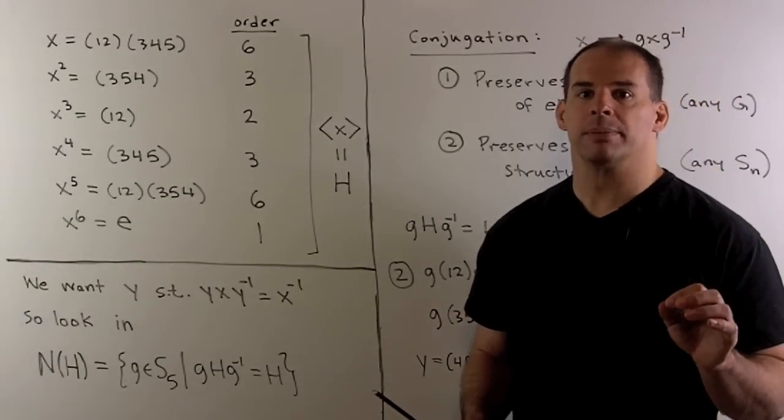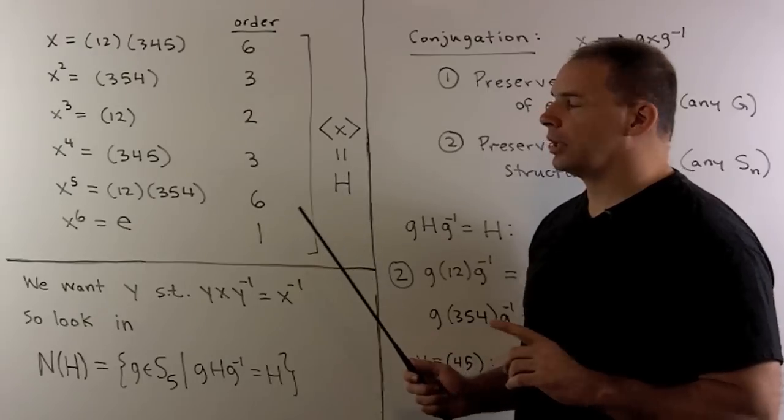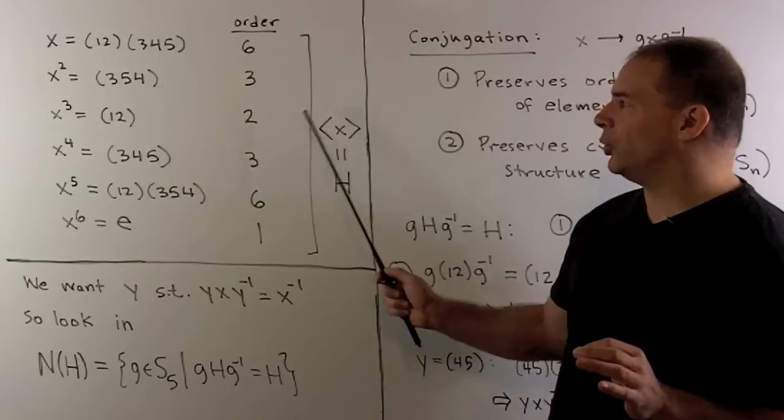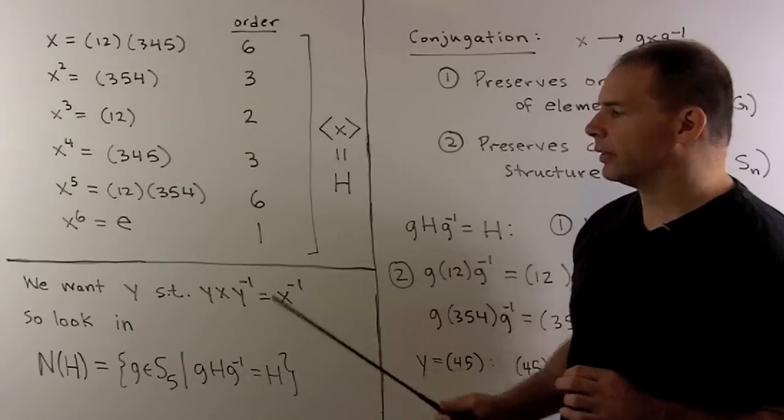With our element of order six, we consider the subgroup H that it generates. H will have two elements of order six, two elements of order three, a unique element of order two, and the identity element.